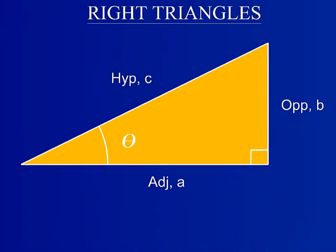Let's look at an example of a right triangle with an angle of interest, theta. The hypotenuse C is the longest side of a right triangle and is always the side that is opposite to the right angle of the right triangle.